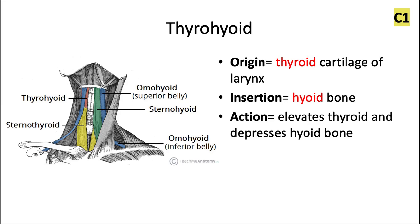The thyrohyoid muscle is innervated by cervical spinal nerve 1. It originates from the thyroid cartilage of the larynx, and it inserts into the hyoid bone. The action is to elevate the thyroid gland and depress the hyoid bone.